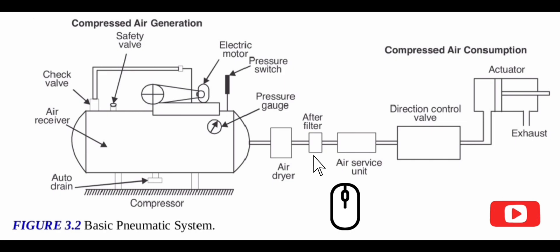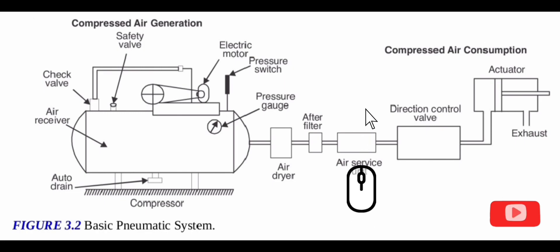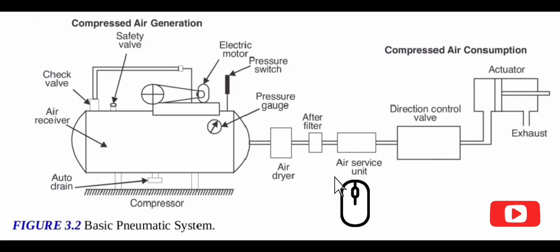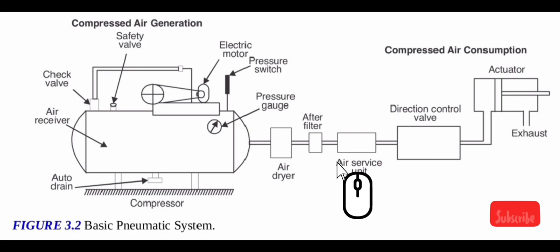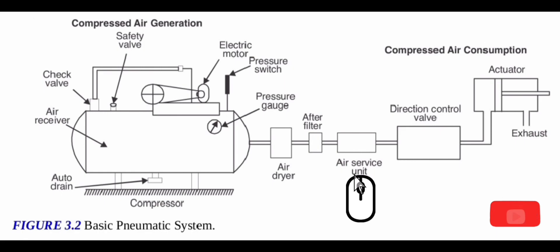11. Air service unit: Filter, regulator, and lubricator combined in one device is popularly known as an air service unit or FRL unit. Its purpose is to supply air to other successive applications in the line. It provides clean air at the required pressure with lubricant added to it to increase the life of equipment.